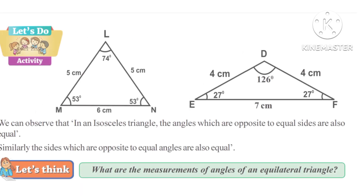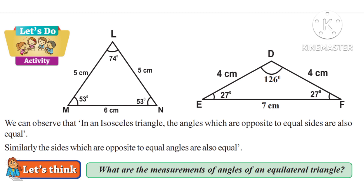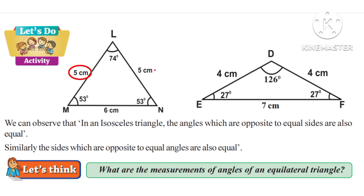Now let us do another activity. Triangle LMN is an isosceles triangle, meaning it has two equal sides: LM and LN are both equal to 5 cm. Now observe the angles exactly opposite to those equal sides — angle M and angle N are both equal to 53 degrees.